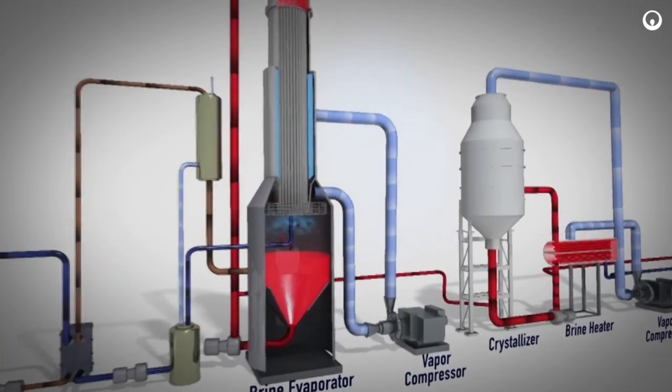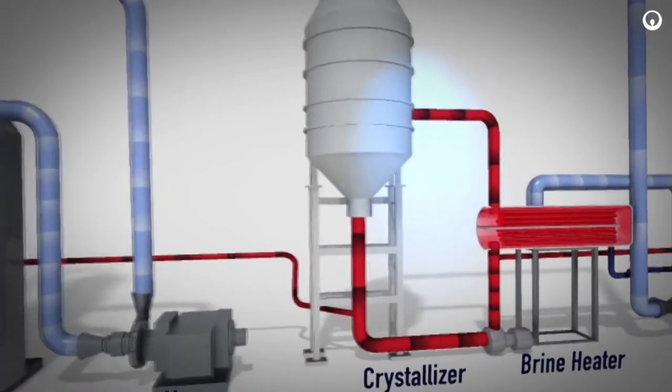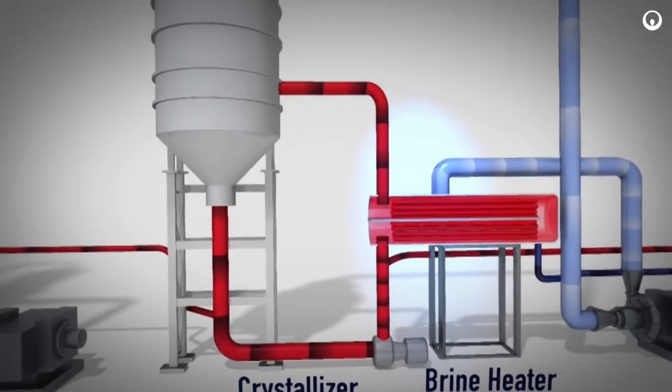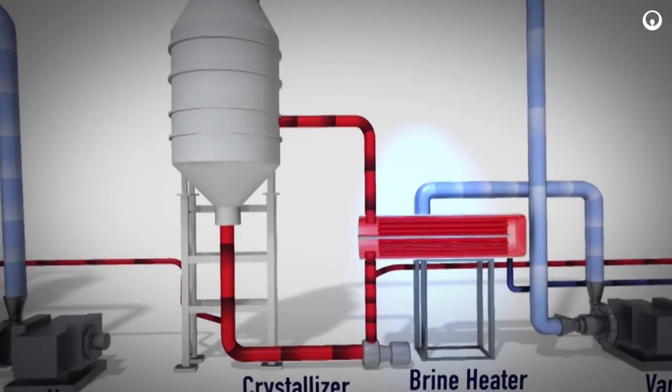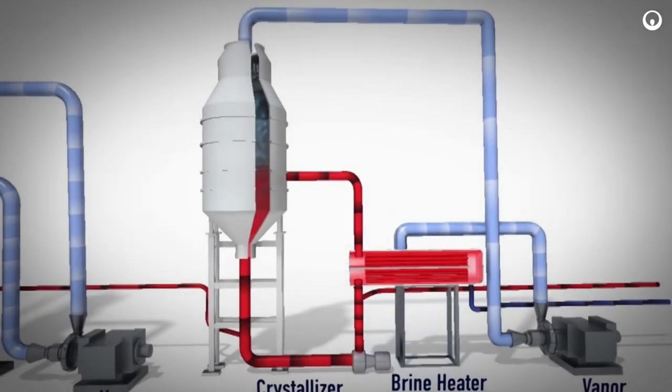Concentrated brine from the brine evaporator is sent to the brine crystallizer. The concentrated brine is routed to the shell and tube brine heater. The concentrated brine is heated to above its boiling point in the brine heater. The heated brine then enters the crystallizer vapor body.